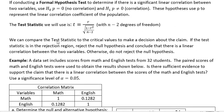We can compare the test statistic to the critical values to make decisions about the claim. If the test statistic is in the rejection region, we reject the null and conclude that there is a linear correlation. Otherwise we fail to reject the null hypothesis, that means there's no correlation.